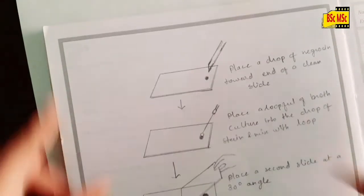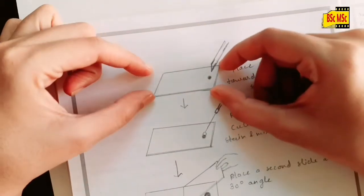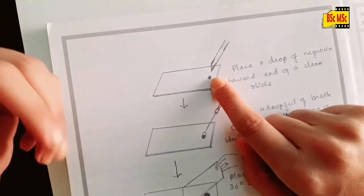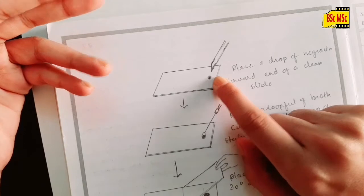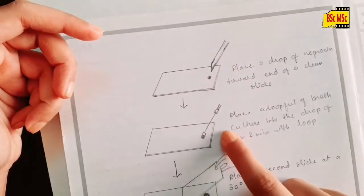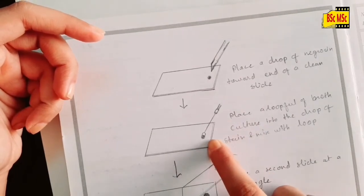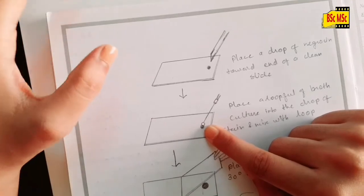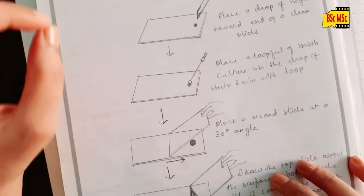I will be showing you with the diagram. You need to take the slide and place a drop of negrosine or Indian ink at the corner of the slide like this. After that, take a loopful of culture, then mix it well into the dye.